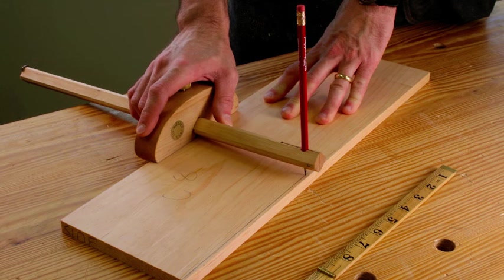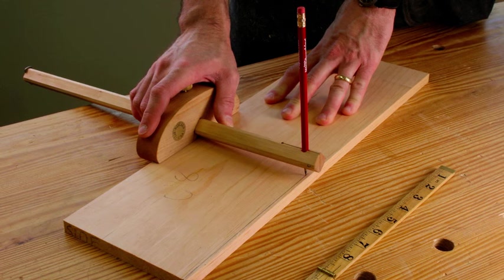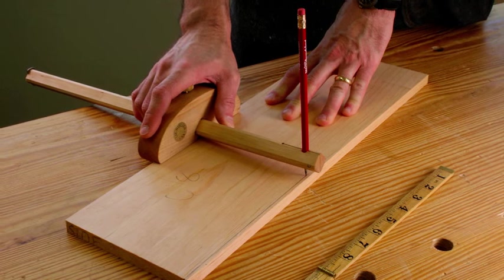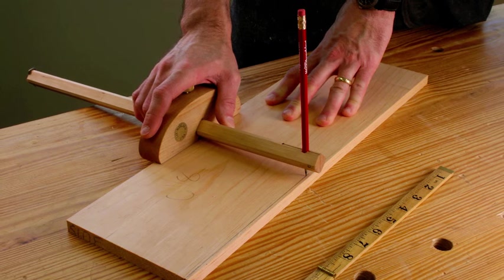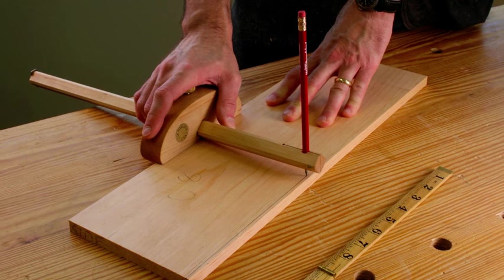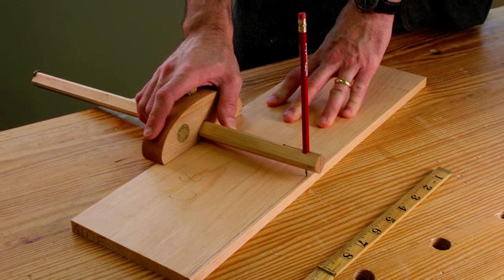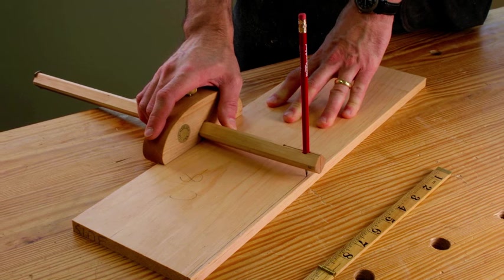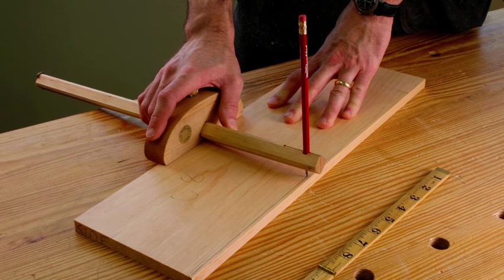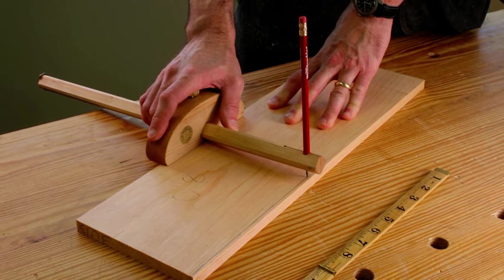Once you get one long edge straight and true, you need to make the other long edge parallel to it. And for that, you use a panel gauge. Panel gauge looks like an oversized marking gauge and that's because that's what it basically is. It has a bigger head and a longer beam. Now this one has a pencil. Some panel gauges will have a pin or knife like a traditional marking gauge. You simply run the head against the true edge and it marks a parallel line to your finished width. Then work down to that line and you're done.